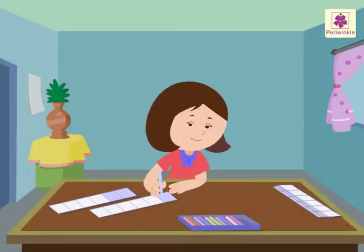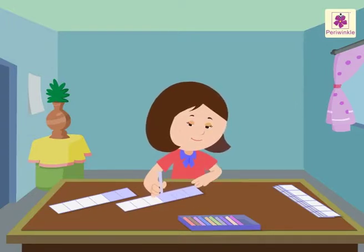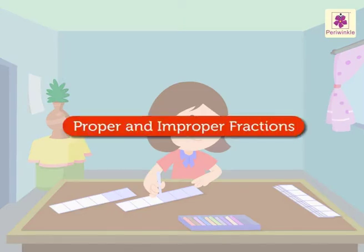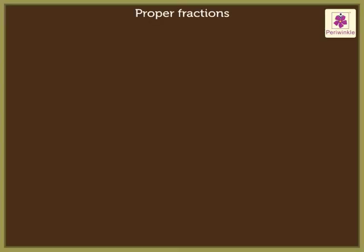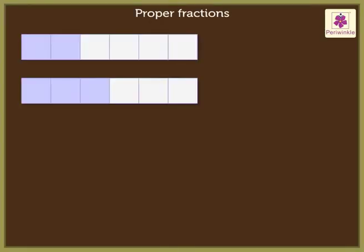Look at Annie — she is coloring some grids for her project. Why not learn proper and improper fractions with her? Let's begin with proper fractions. Annie has colored some portions of two grids. In the first grid, she has colored two parts of the grid out of six. Next to it she has written the fraction two-sixths.